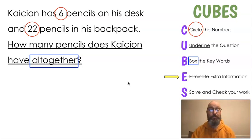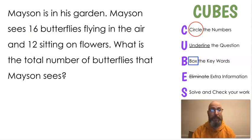Next, we're going to look for extra information. Do you see any extra information in that? There's not any in there. You could possibly say backpack and desk are, but not really. So the big things we need to know are six pencils, 22 pencils all together. And then we could solve it. We could add.